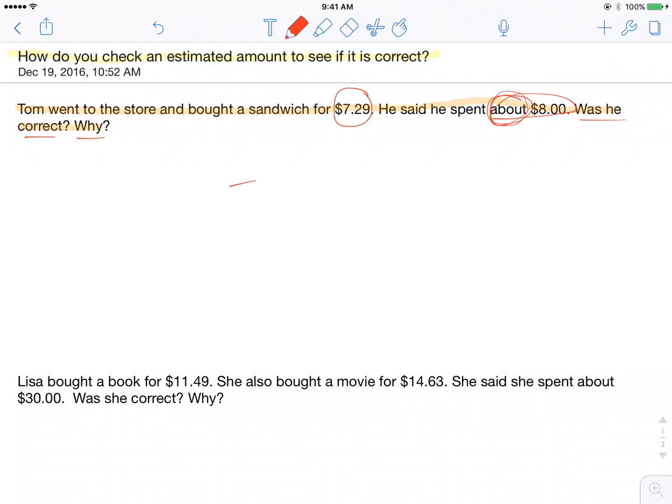So Tom took his amount, $7.29, and he said that that rounds to $8. So I have to figure out, was that correct? Well, in my head I can see that he went from $7 to $8, so he's rounding to the nearest dollar.